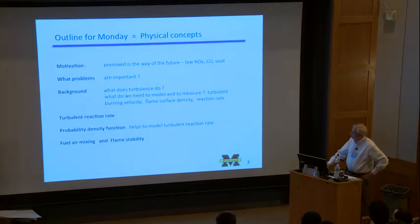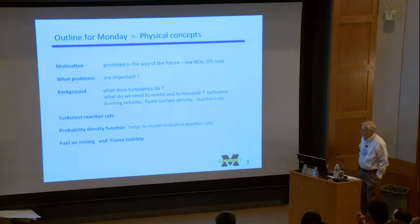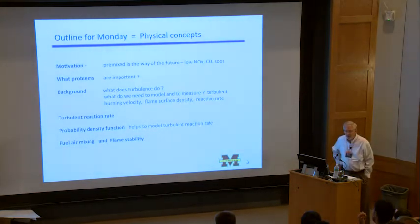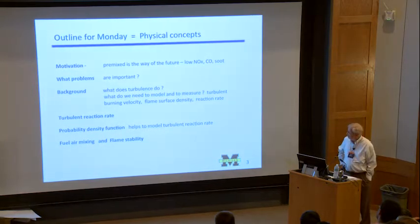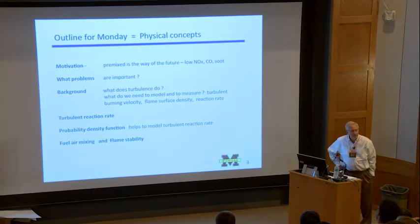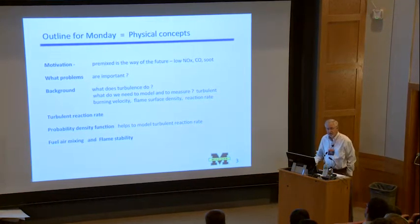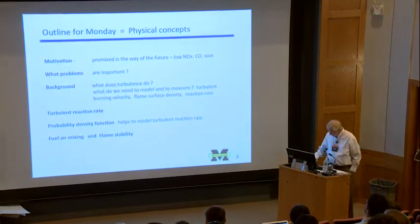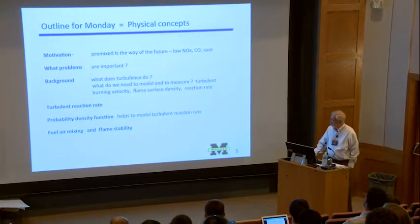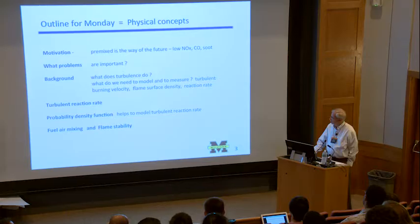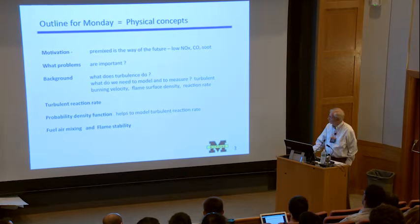So we need to learn what does turbulence do? Why do we need to model it? And why are the existing models not adequate? I mean, you can run Fluent. Some of you have access to Fluent, I assume, right? Or some of these commercial codes. You can run premixed turbulent flames or non-premixed turbulent flames, but they're not considered to be acceptable for scientific application. There are more modern methods that people are using for good science.